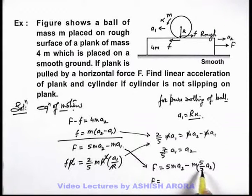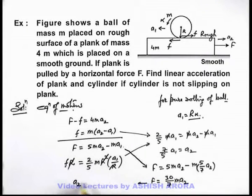From here on simplifying we get 5 minus 5/7. So this we write as 30/7 ma₂. This is the result we get. From here we get the value of acceleration of plank as 7F upon 30m. That'll be the answer to our problem.